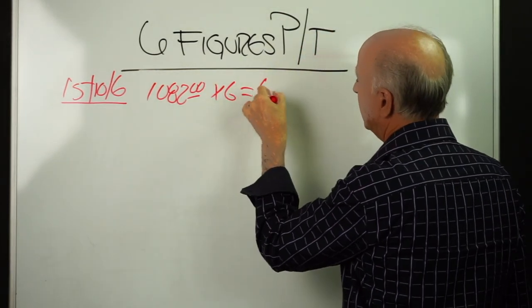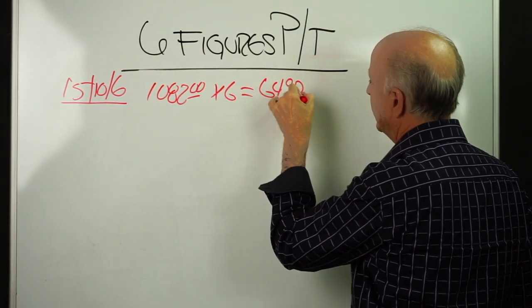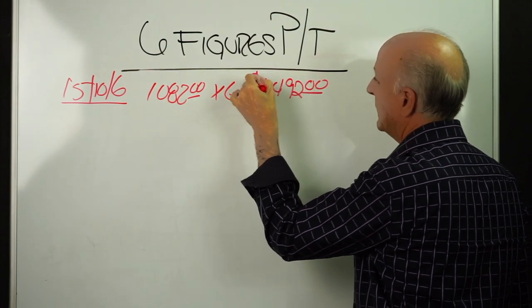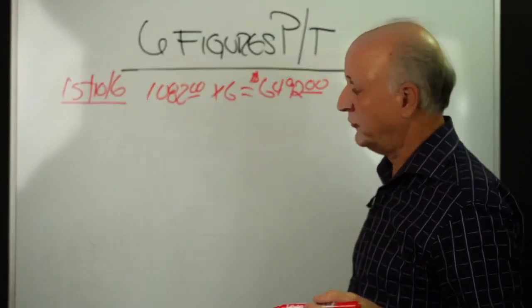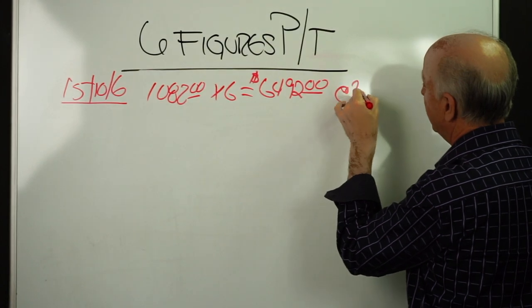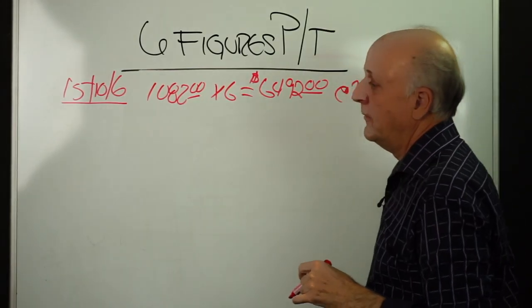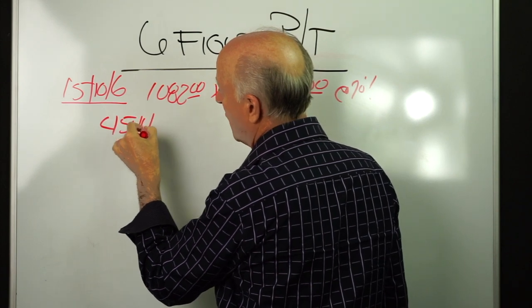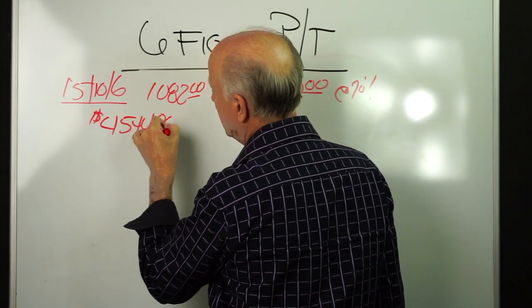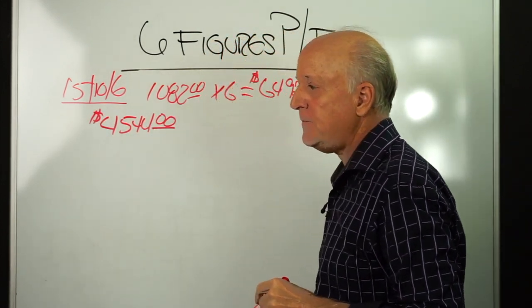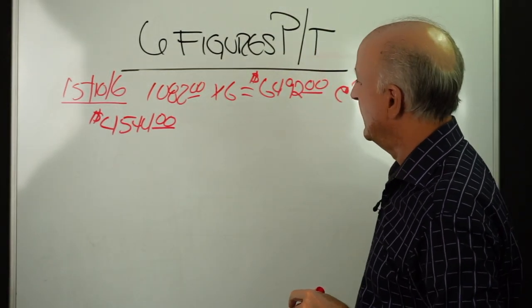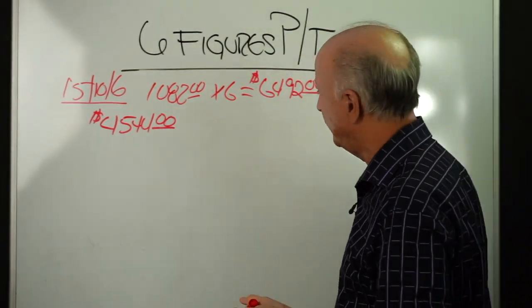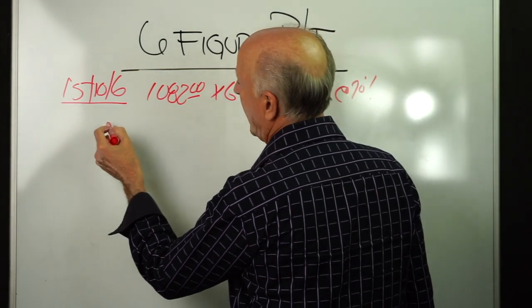So we have $1,082, which is our average. We're going to do that times six sales, which is going to give us a number of $6,492. Now we're going to assume that you're on the 70% contract, which is going to give us a number of $4,544.